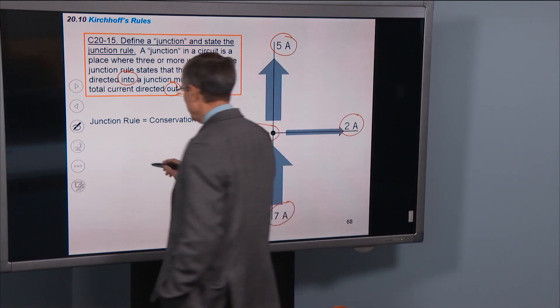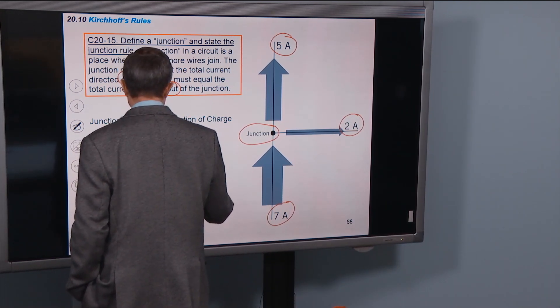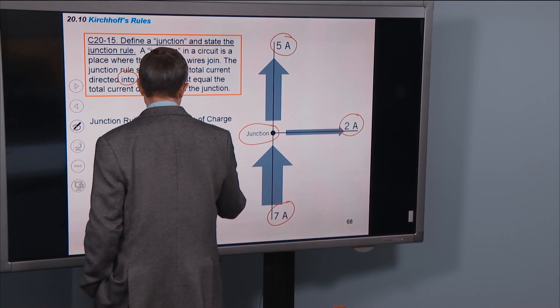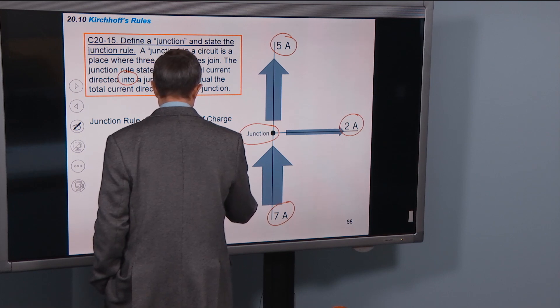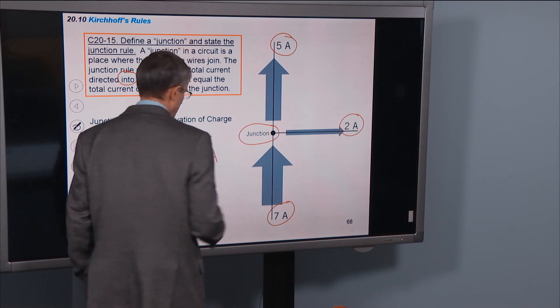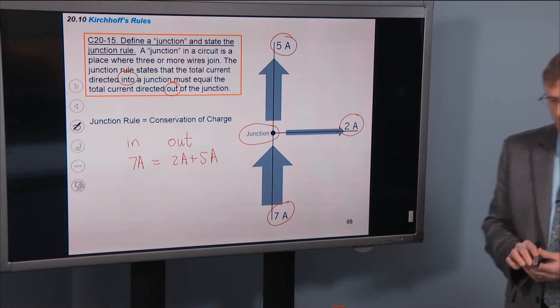So the current in, 7 amps, is the current out, is 2 amps plus 5 amps. And this is similar to the example we did earlier. I1 equals I2 plus I3.